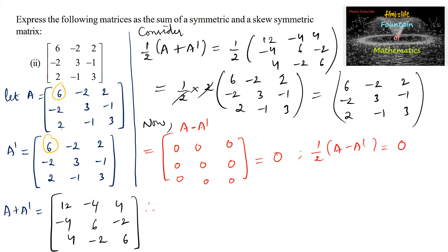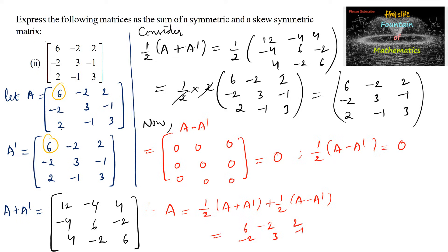Therefore matrix A equals (1/2)(A + A transpose) + (1/2)(A − A transpose), which is [6,-2,2; -2,3,-1; 2,-1,3] plus the zero matrix. This equals A itself, and hence we can say the given matrix can be expressed as the sum of a symmetric and skew symmetric matrix.